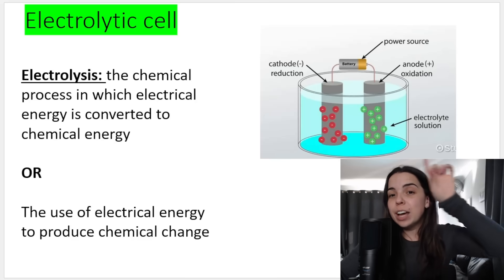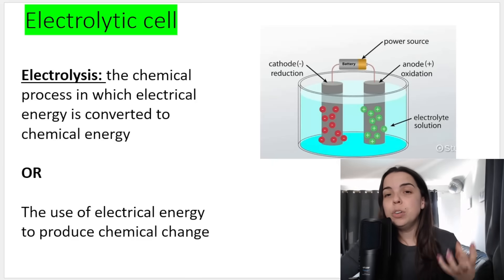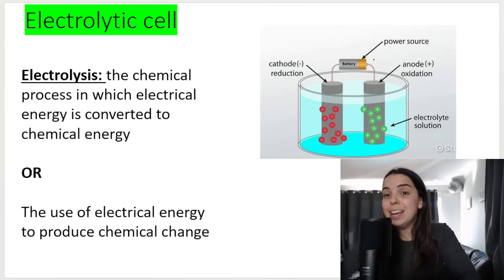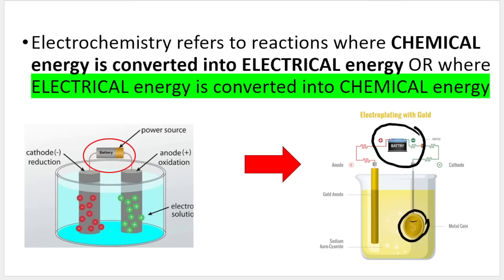If you take a look at the electrolytic cell that I have over here, you can see that I'm providing this cell with a battery, a power source. The power source provides the electrical energy and that makes a chemical change inside my cell. So when asked about the energy changes that takes place in the electrolytic cell, you'll simply say electrical energy is converted into chemical energy.